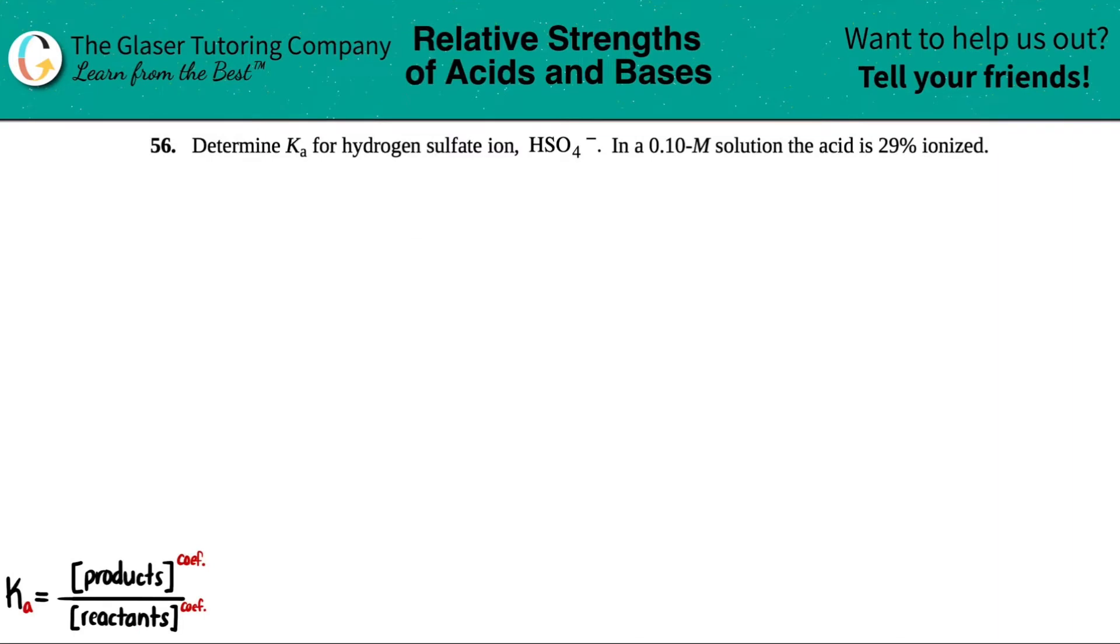Number 56. Determine the Ka for hydrogen sulfate ion, HSO4 minus, in a 0.10 molarity solution where the acid is 29% ionized.